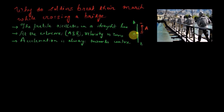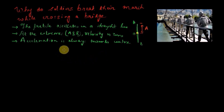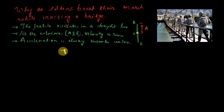Let's say the particle initially starts from point O. It completes one oscillation — it goes from O to A, then reaches B, and then finally returns to O. Let's say it completes one oscillation in time T. The second oscillation it will also complete after time T. So the time T in which the particle completes one oscillation is called the time period of oscillation.